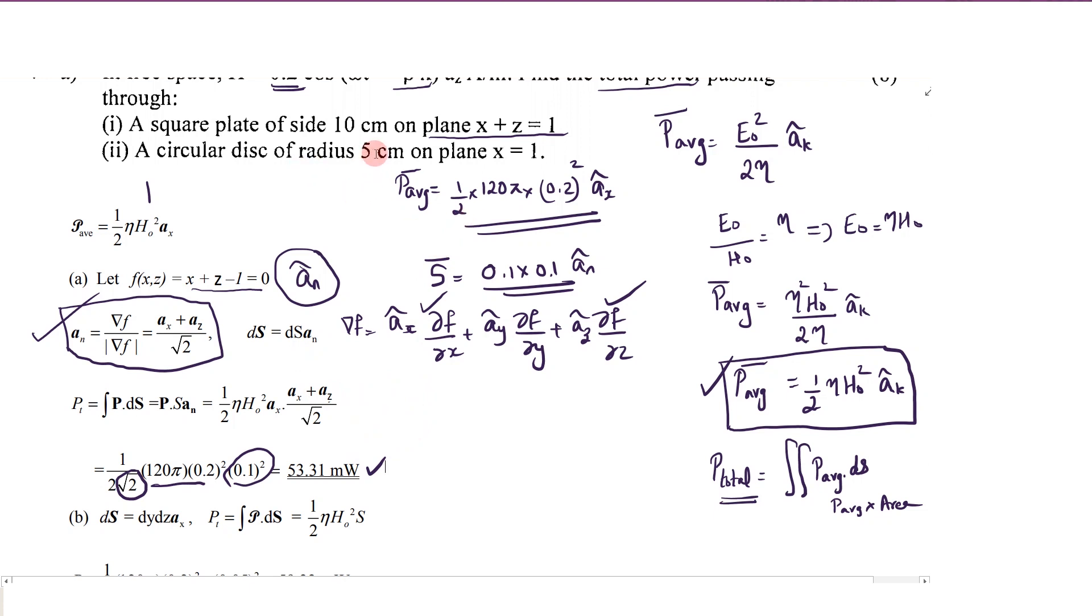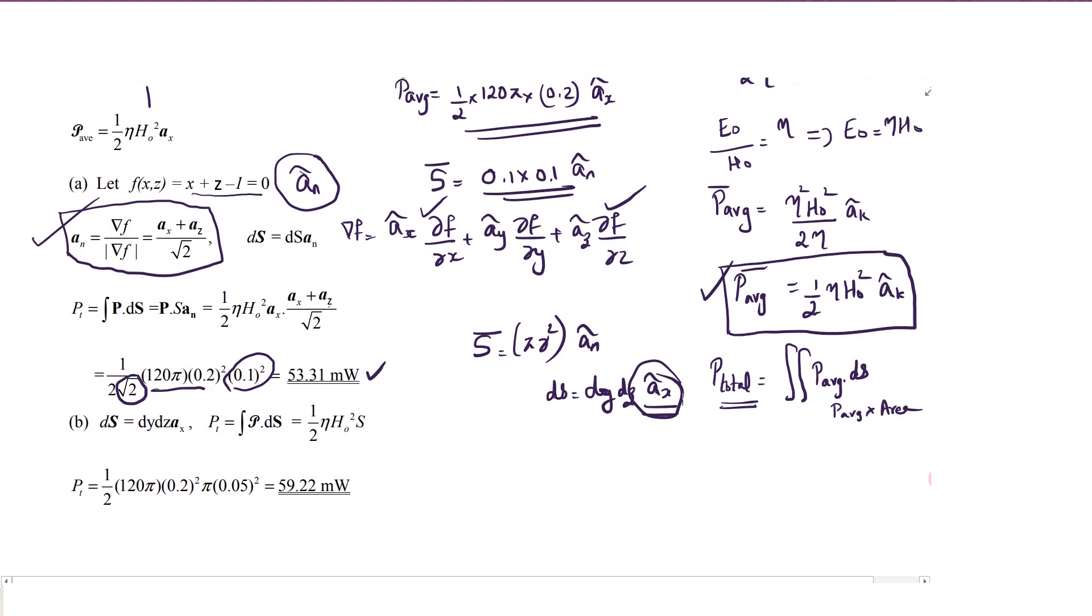In the second case it's a circular disk, so again S means first you have to consider the magnitude, that will be pi r square. Here radius is 5 centimeters, so 0.05 into 0.05. Next is the unit vector. If the function is given, you can use this equation, but here it is more clear because x equals 1 plane. You need not take gradient because this is a y z plane, that's why x is a constant.